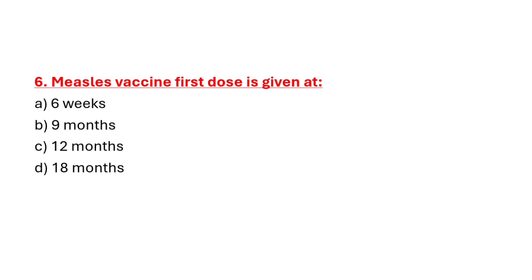Question 6: Measles vaccine first dose is given at. Option A: 6 weeks. Option B: 9 months. Option C: 12 months. Option D: 18 months. Correct answer is Option B: 9 months.